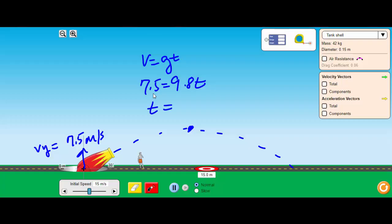Now the other thing that I know to be true is that my time up equals my time down. So if it takes 0.77 seconds to get to the top, it's going to take double, 1.54 seconds to get all the way across.